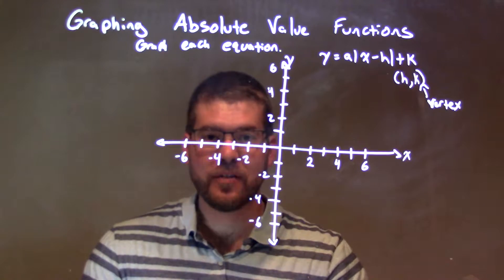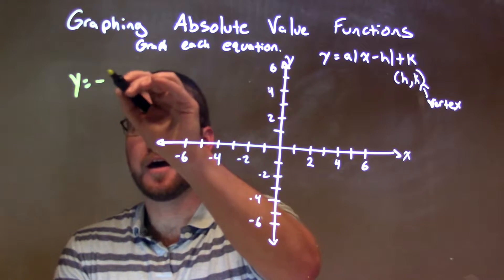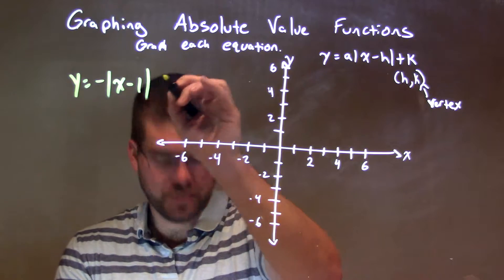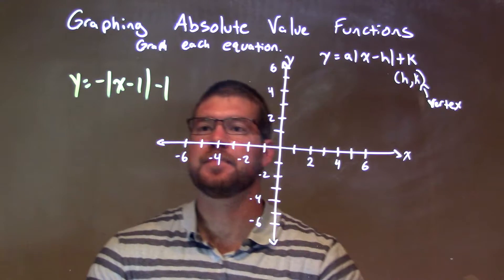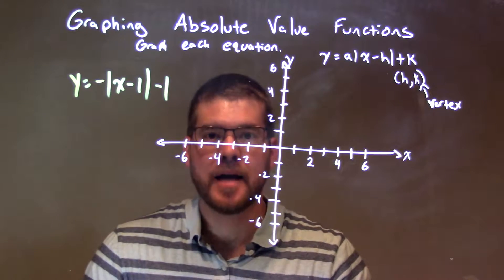If I was given this equation, y equals negative absolute value of x minus 1, minus 1, what I want to do here is find my vertex.